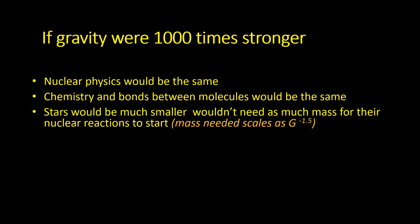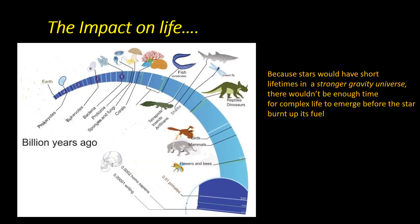These mini stars would have much shorter lifetimes, perhaps a few million years rather than 10 billion year lifetime which our Sun has. If we went even further and made gravity a million times larger, the lifetime of stars would be even less, perhaps thousands of years. In such a strong gravity universe, there couldn't possibly be enough time for the evolution of complex life to have happened.